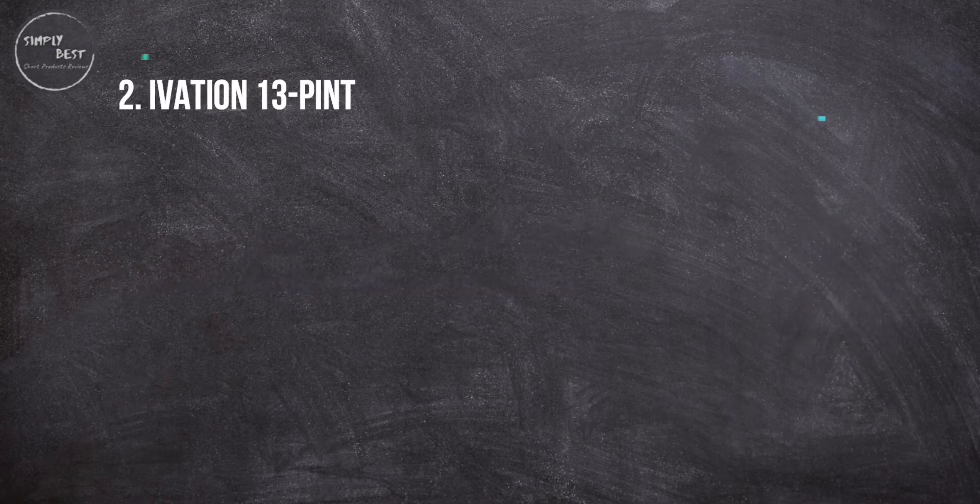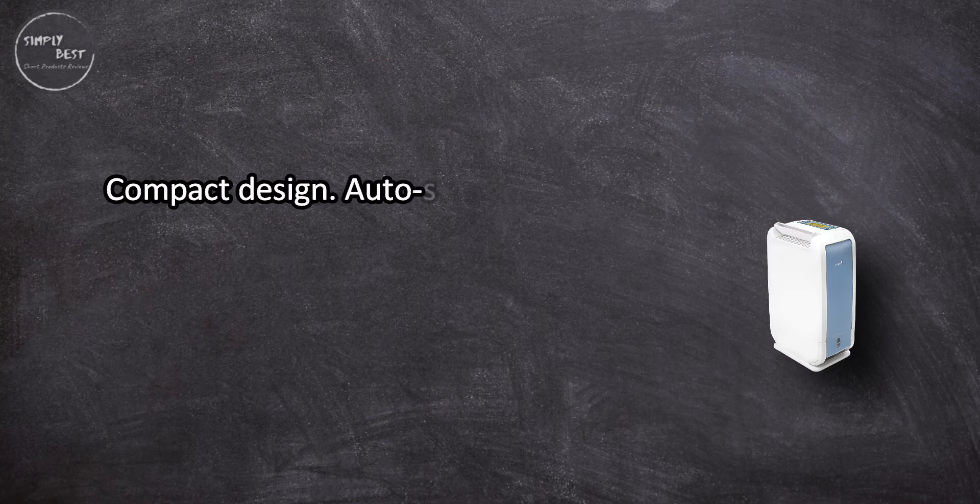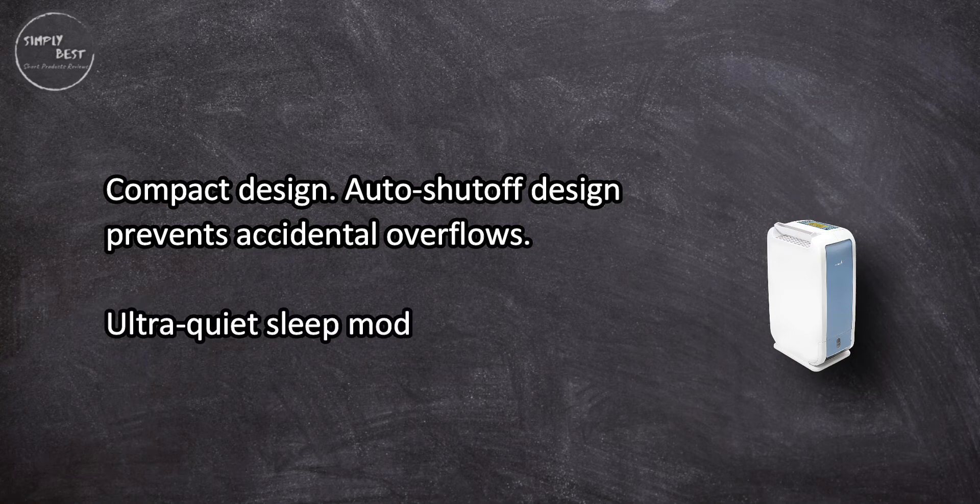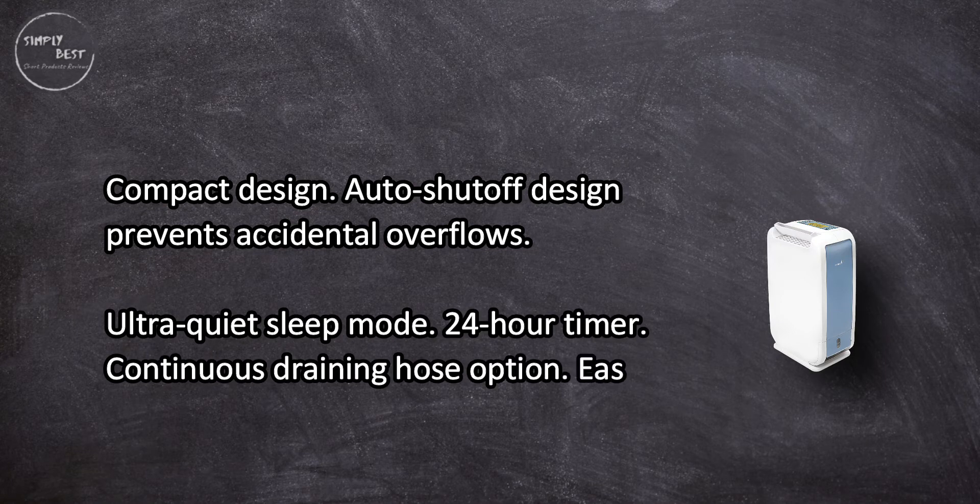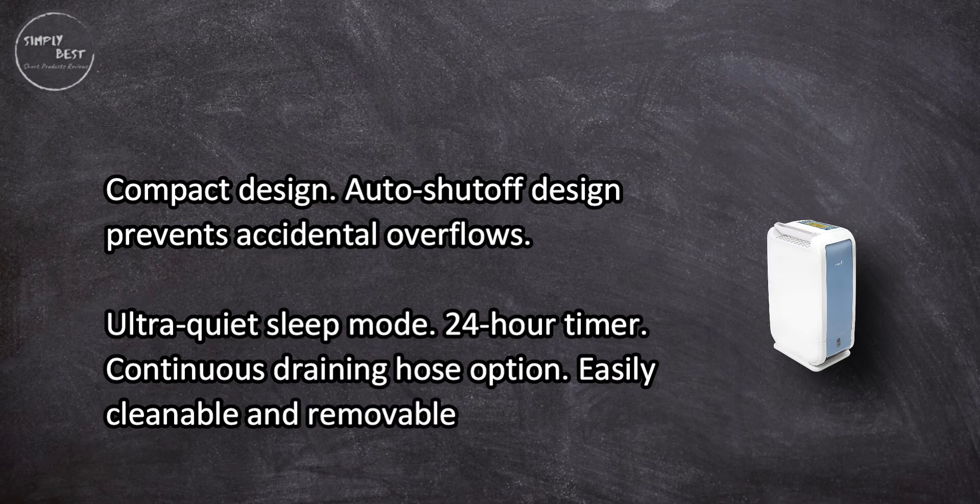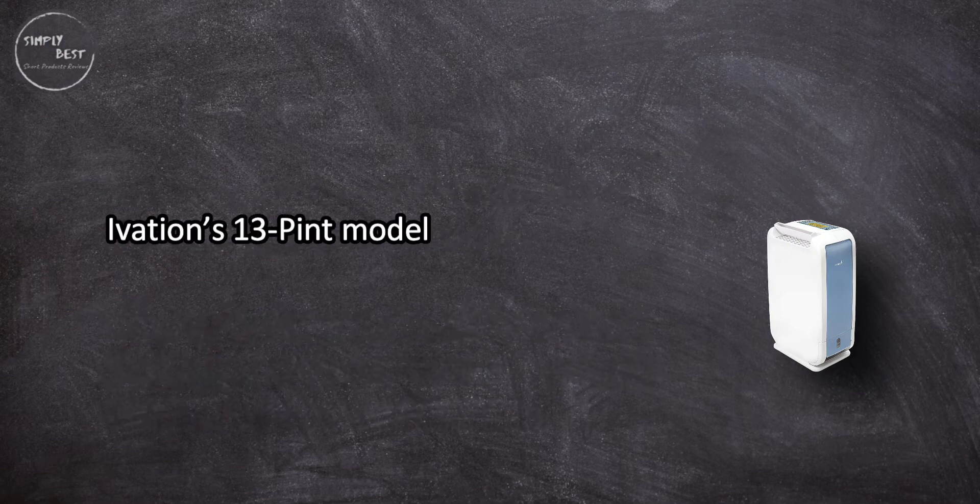At number two, IVATION 13 Pint Small Area Desiccant Dehumidifier. Compact design, auto shutoff design prevents accidental overflows, ultra quiet sleep mode, 24-hour timer, continuous draining hose option, easily cleanable and removable filter.